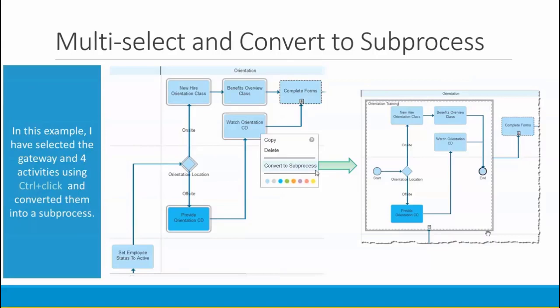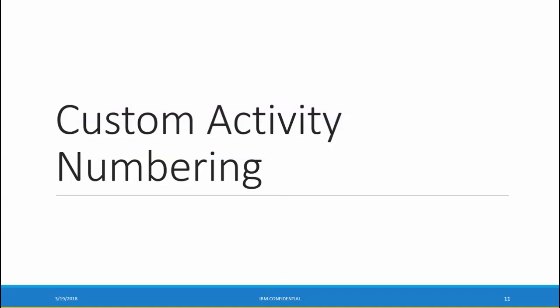Last but not least, you can turn a multi-selection into a sub-process. In this example, I want to turn four selected activities and a gateway into a sub-process. I simply select them using control-click and choose convert to sub-process from the menu. You can see the result — the sub-process, which I've named orientation training, has been created, and the related elements removed from the higher level diagram.